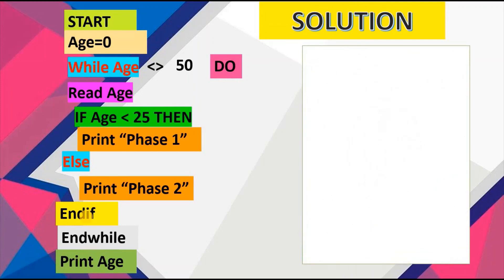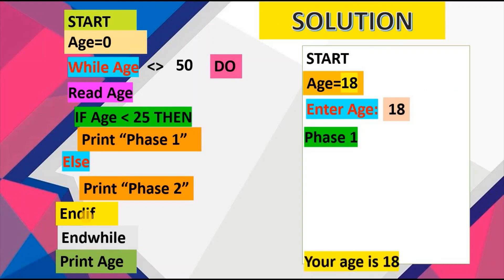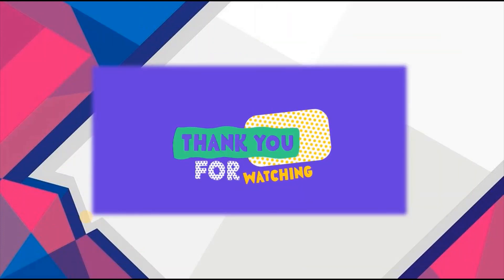In the live example: start, age is currently zero. Testing while age is not equal to 50. The user is prompted to enter their age and enters 18, replacing the placeholder 0. We test: since 18 is less than 25, the message 'phase 1' is displayed on screen. The end if and end while follow because phase 2 is not displayed since the age was not greater than 25. The user then sees 'your age is 18' on screen. And that wraps up our while loop.